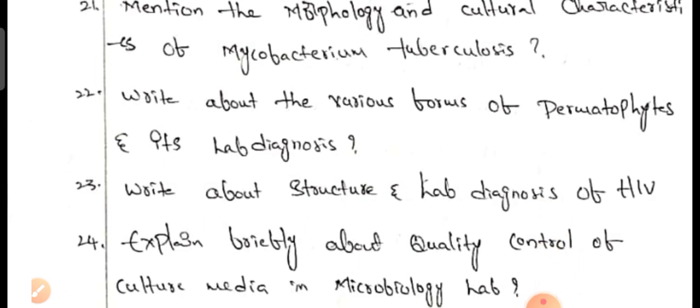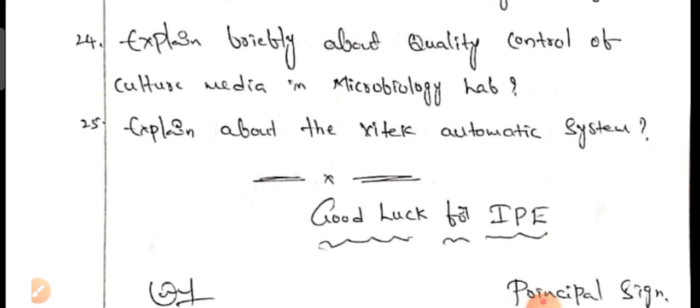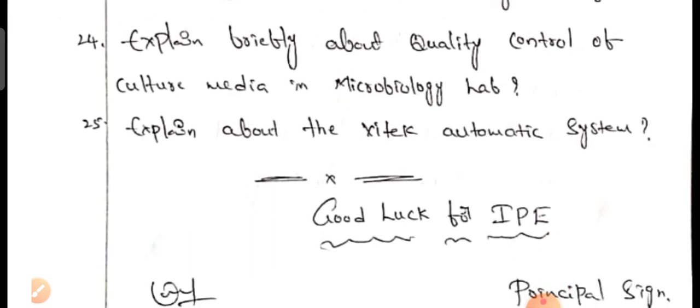Additional six-mark questions: mention the morphology and culture characteristics of Mycobacterium tuberculosis, write about the various forms of bacteriophage and its lab diagnosis, write about the structure and lab diagnosis of HIV, explain briefly about quality control of culture media and microbiology lab, and explain about the semi-automatic system.